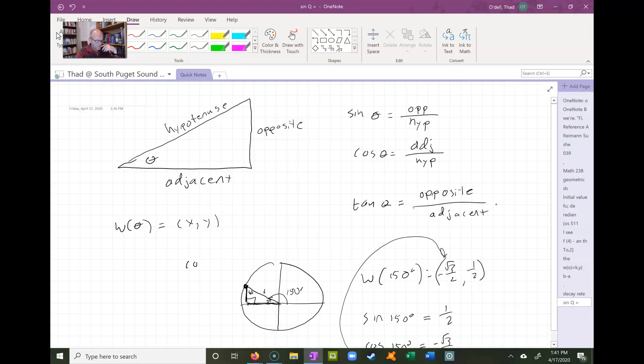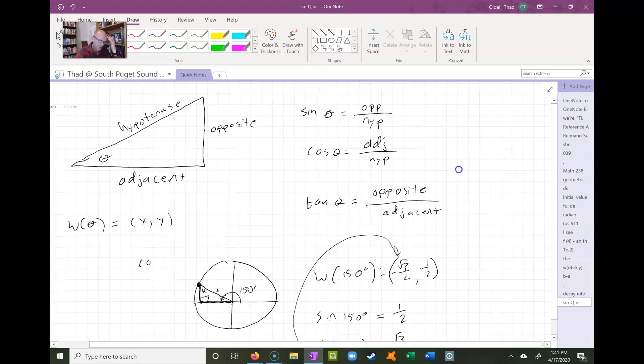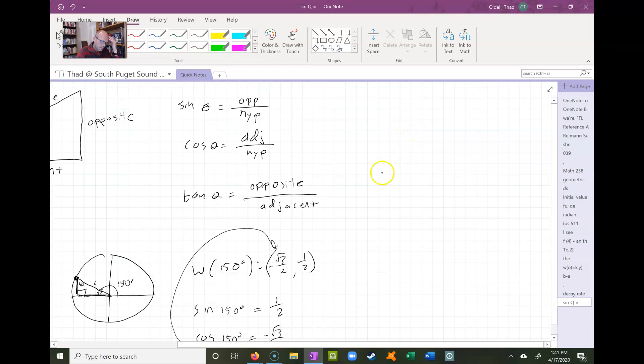Which is kind of interesting because notice if you take sine, which is opposite over hypotenuse, and divide it by cosine, which is adjacent over hypotenuse, the hypotenuses cancel out and notice you just get opposite over adjacent. So we also notice that because of that, tangent can also be described as sine of θ divided by cosine of θ.